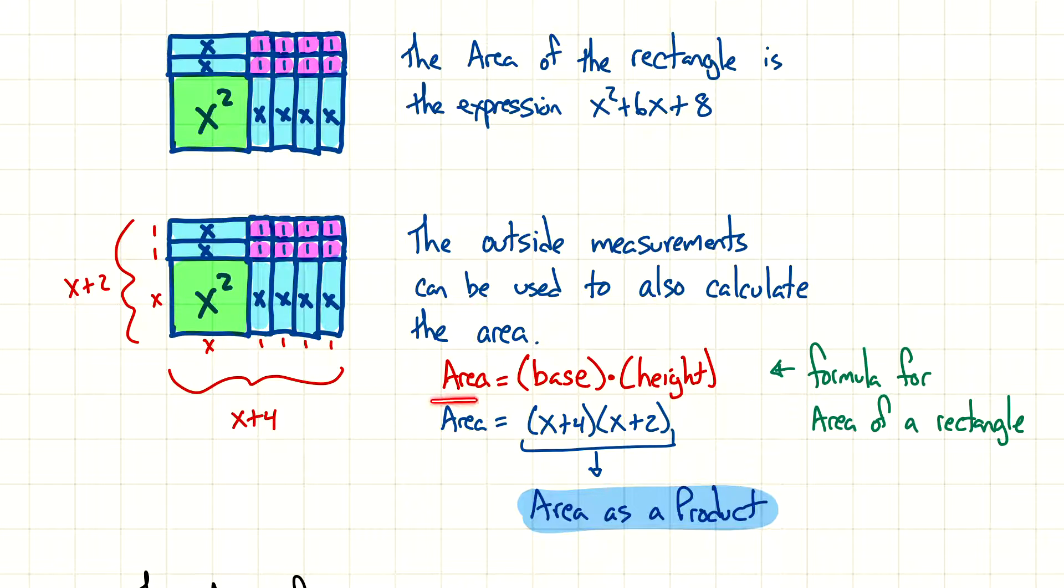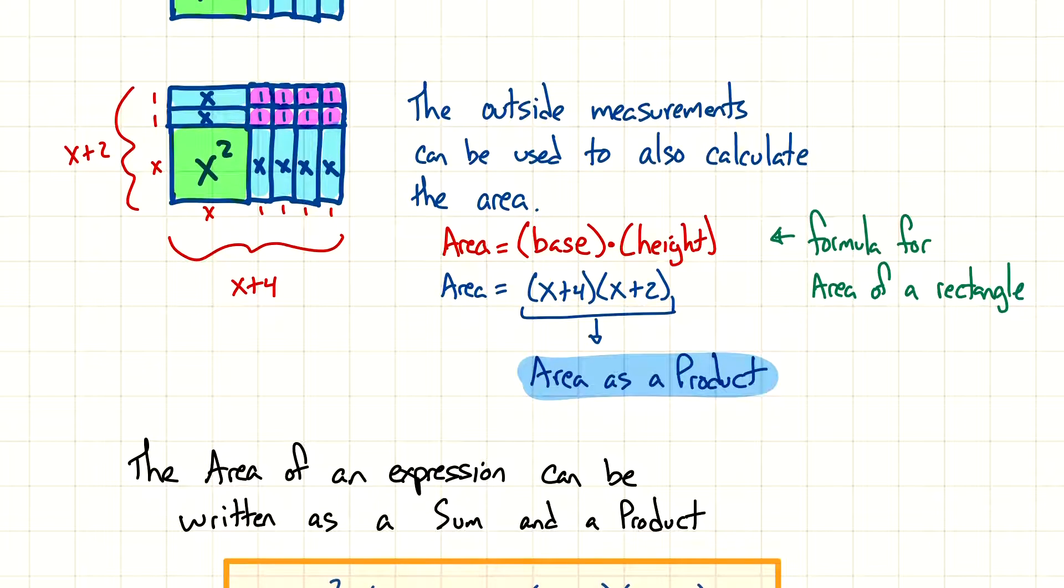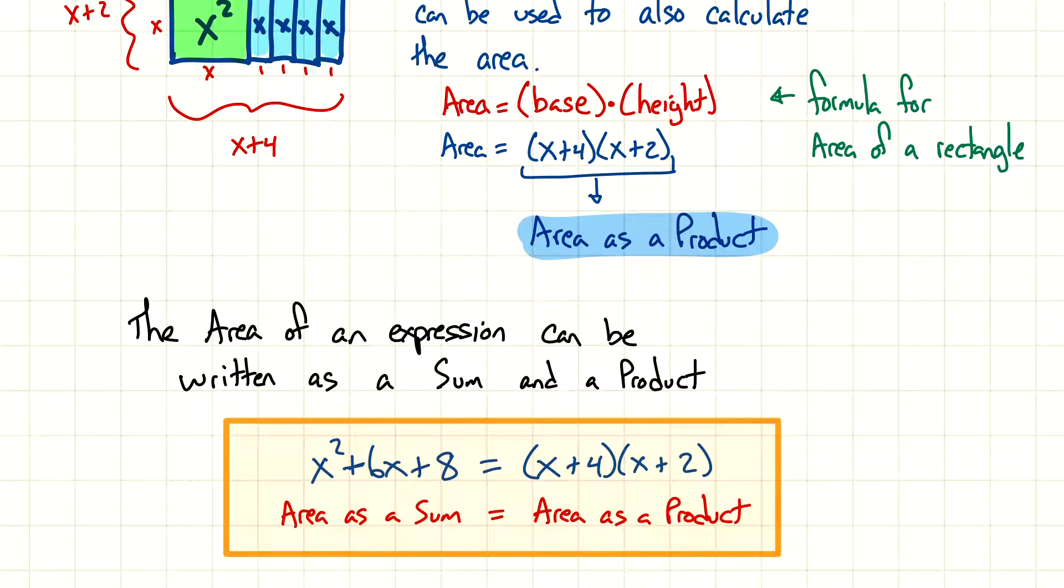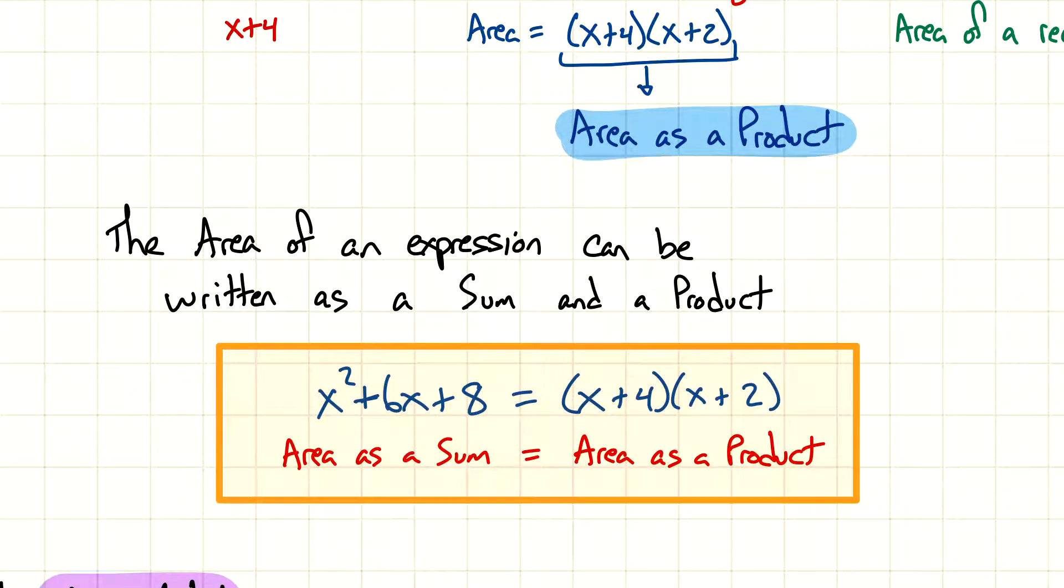So, x plus 2 and x plus 4, we have our base and we have our height. If I look at that formula, base times height, and I replace the base with x plus 4 and I replace the height with x plus 2. Then, what I have now is the area written as a product. I'm not asking you to multiply this out or do anything like that. We're just rewriting.